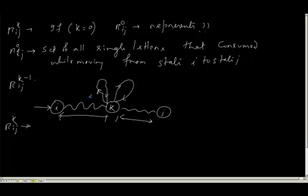So how will I write it down? So the first part, I can say that this represents a regular expression R,i,k,k minus 1. Then the looping things, it can have multiple loops. So I can say this will be R,k,k,k minus 1. And since we can have more than one.